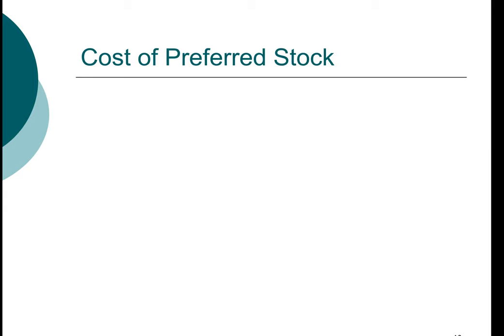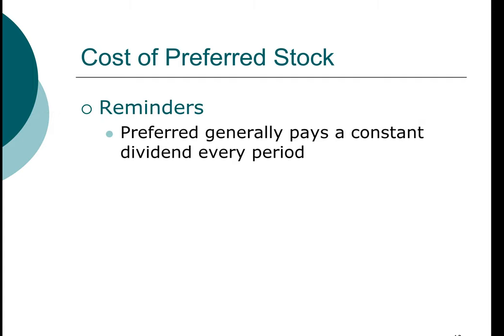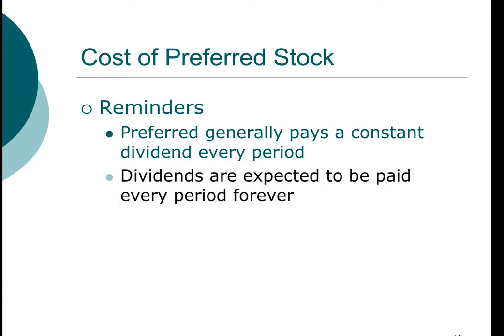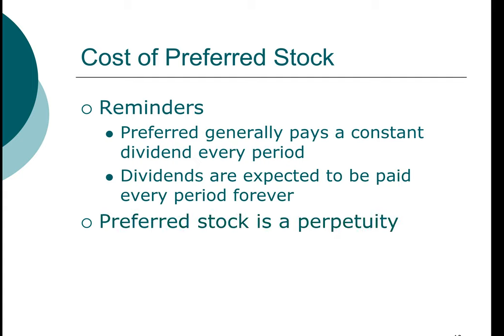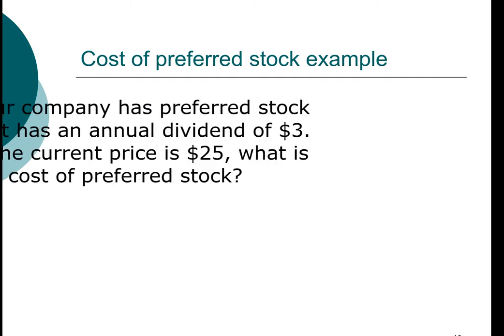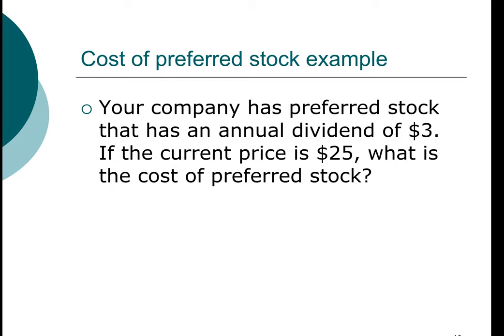Next, let's compute the cost of preferred stock. Preferred stock generally pays a constant dividend every single period, and preferred stock has no ending date, so the dividends are expected to be paid every single period forever. In other words, preferred stock is a perpetuity. The cost of preferred stock — using the subscript P to denote preferred stock — is equal to the dividend of the preferred stock divided by the price of the preferred stock. For example, your company has a preferred stock that pays annual dividends of $3 and the price is $25. The cost of preferred stock is simply the dividend yield: $3 divided by $25, or 12%.